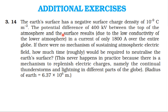From NCERT textbook, from the topic current electricity, additional exercise 3.14: the earth's surface has a negative surface charge density of 10 to the power minus 9 coulomb per meter square. The potential difference of 400 kV between the top of the atmosphere and the surface results due to the low conductivity of the lower atmosphere, giving a current of only 1800 ampere over the entire globe. If there were no mechanism of sustaining the atmospheric electric field, how much time would be required to neutralize the earth's surface? This never happens in practice because there is a mechanism to replenish electric charges, namely the continual thunderstorms and lightning in different parts of the globe. Radius of the earth is 6.378 × 10⁶ meters.